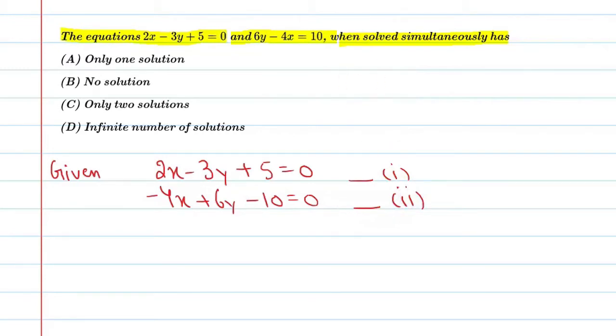Now start the solution. Dekhye, जब भी मारे पास linear equations होती हैं और अगर हम उनको standard form of the equation से compare करें, we can say 2x minus 3y plus 5 equal to 0.